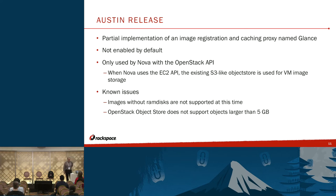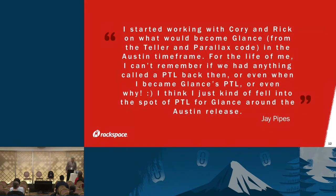Some known issues with Austin: images without RAM disks were not supported, and the OpenStack Object Store didn't support any objects greater than five gig. Jay said he started working with Corey and Rick on what would become Glance from the Teller and Parallax code in the Austin timeframe, and for the life of him, he can't remember if there was anything called a PTL back then, or when he became Glance's PTL — he thinks he just kind of fell into the spot around the Austin release.